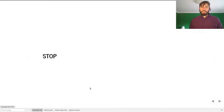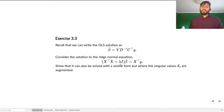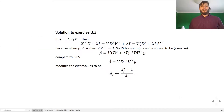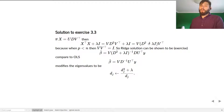Let's go back to exercise 3.3. I asked you to find a solution to the ridge normal equations for ordinary least squares. If we look at the SVD for X, we have UDV transpose. Then if we write X transpose X plus lambda I, we can write this as V times D squared plus lambda I times V transpose.